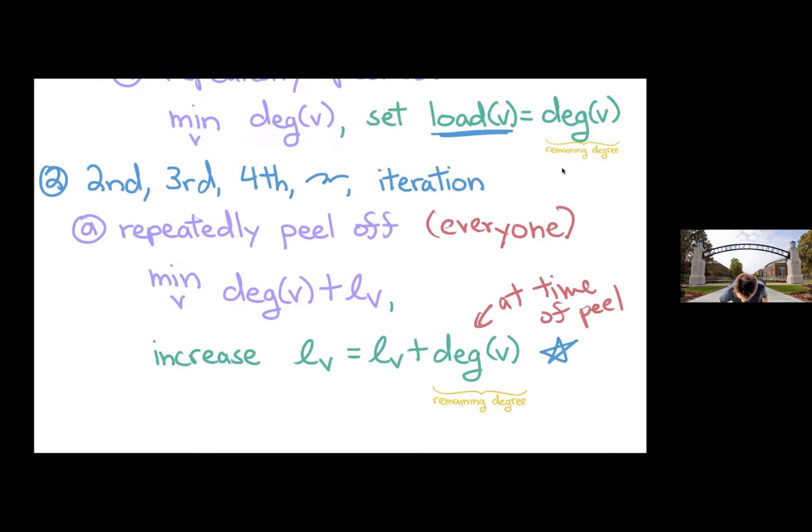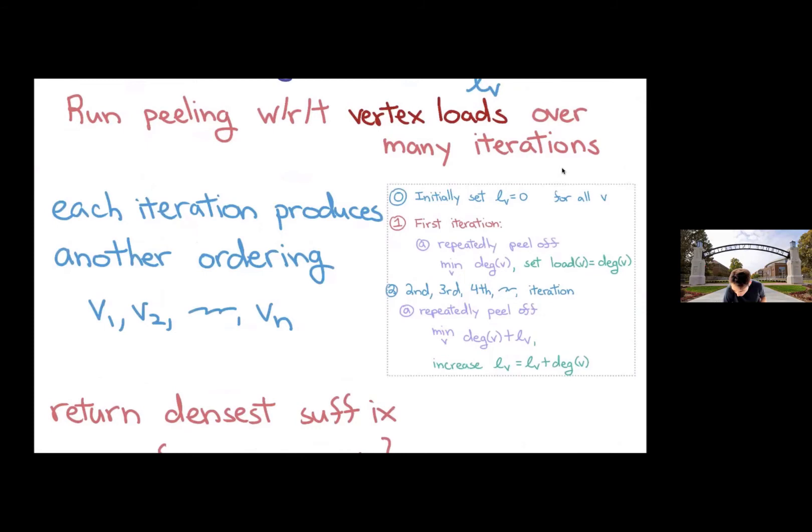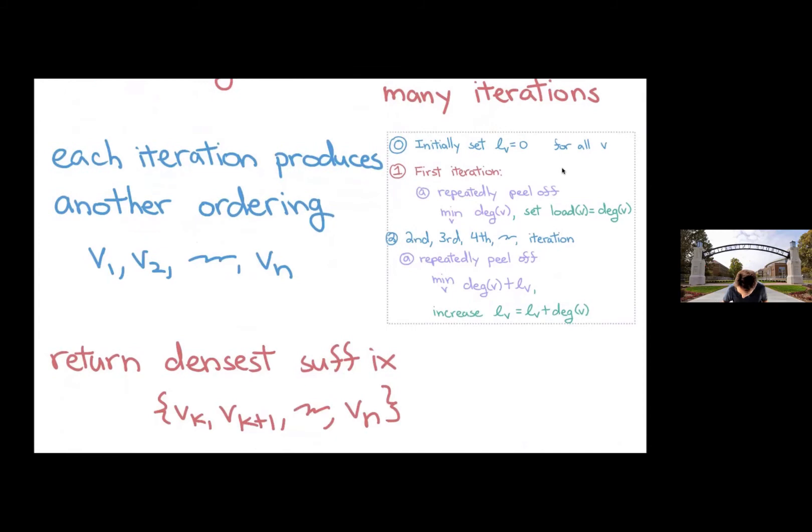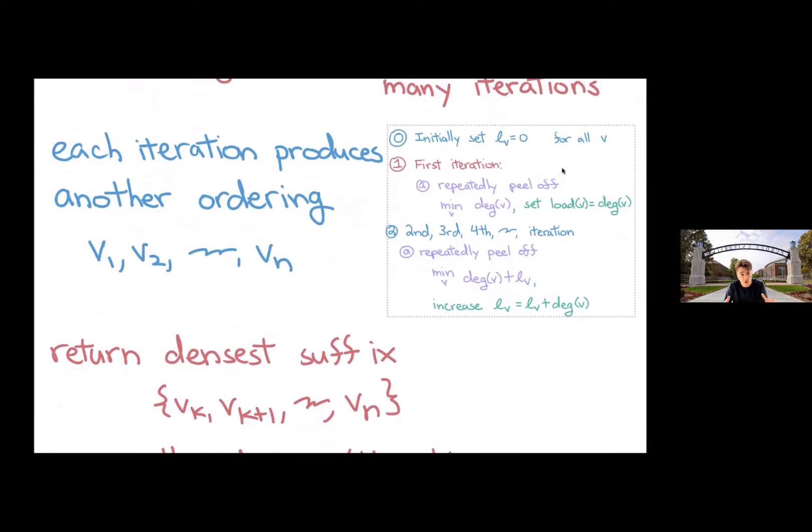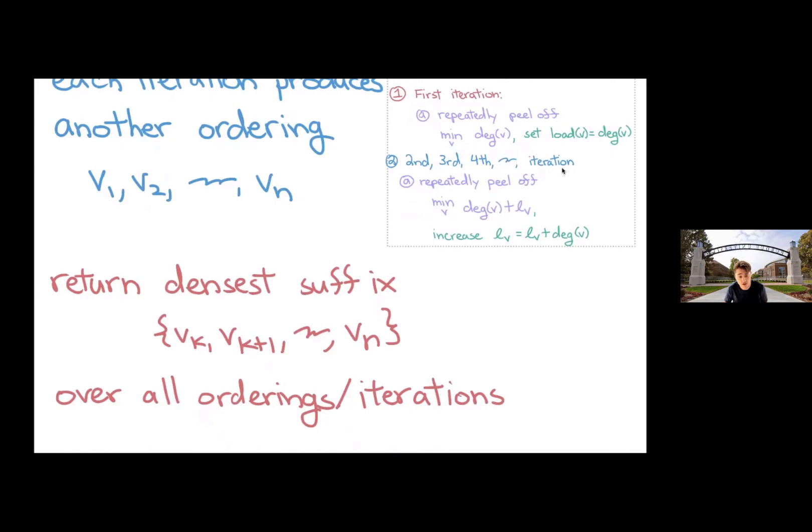So you may not have explained what exactly you output from the peeling. That's coming up. So we're running peeling over and over again, using also keeping track of some sums along the way. And that produces a different ordering or possibly same, but it produces an ordering of vertices with every iteration. And out of all those orderings produced over all the iterations, we can look at all the suffixes or those remaining subgraphs that ever arise. So we ultimately return the densest suffix of the ordering, the densest subgraph over all the orderings iterations in this process.